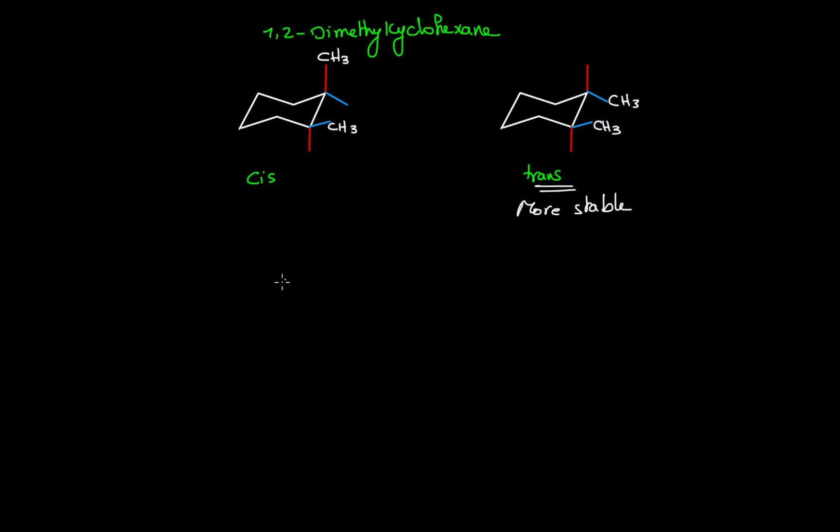However, the question now is: is trans always more stable than cis? For that, we will consider the example of 1,3-dimethylcyclohexane.